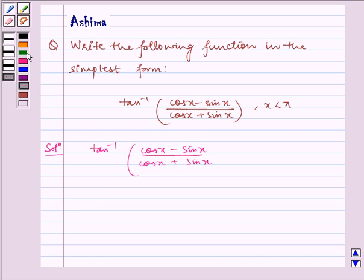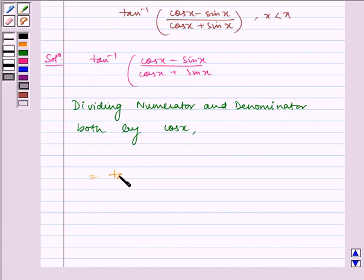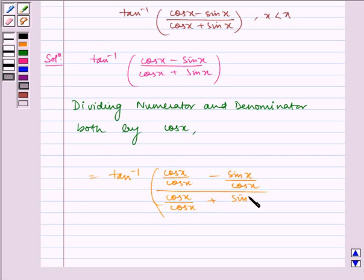So we get, which is equal to tan inverse of (cos x/cos x - sin x/cos x) divided by (cos x/cos x + sin x/cos x).